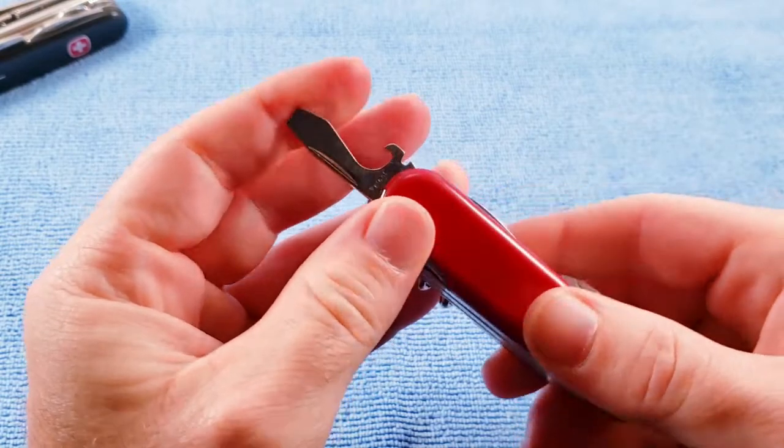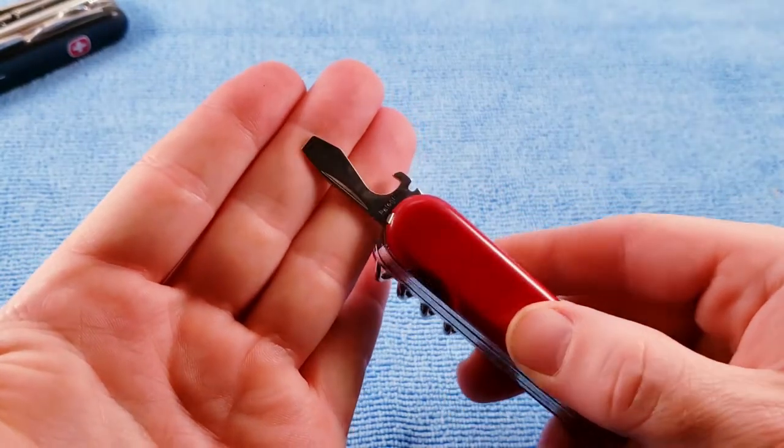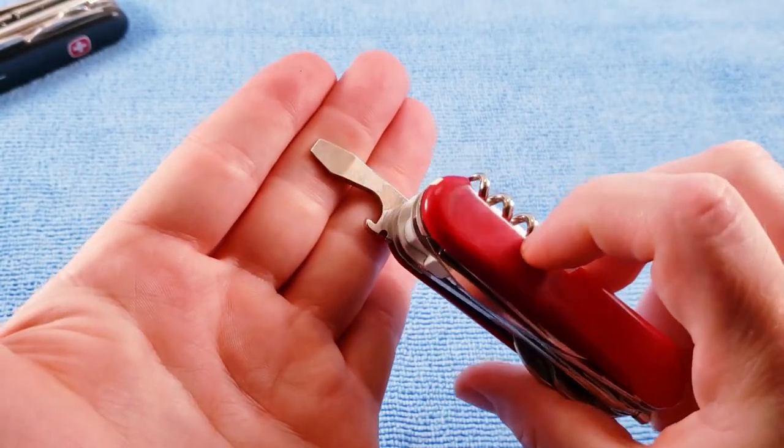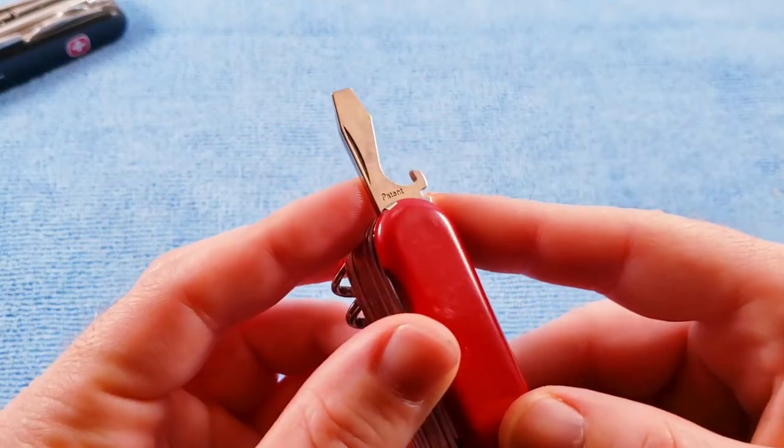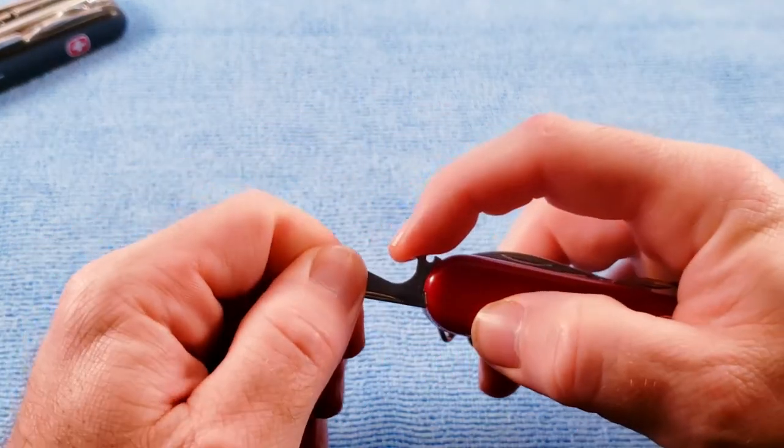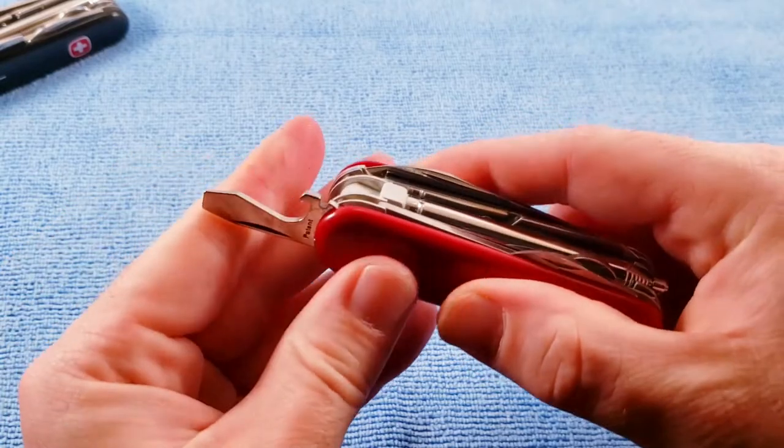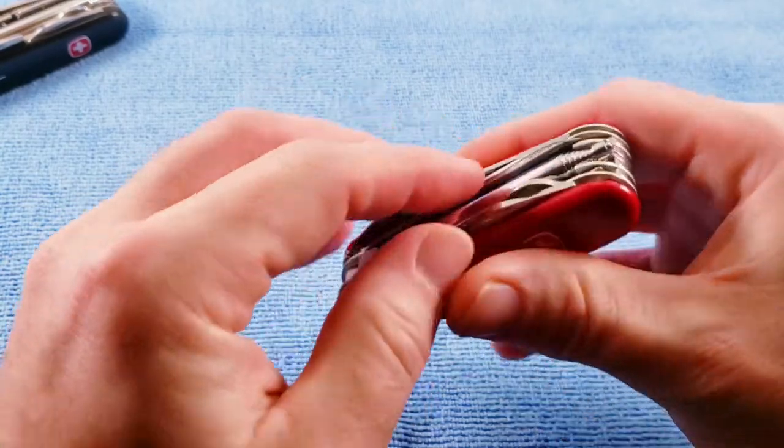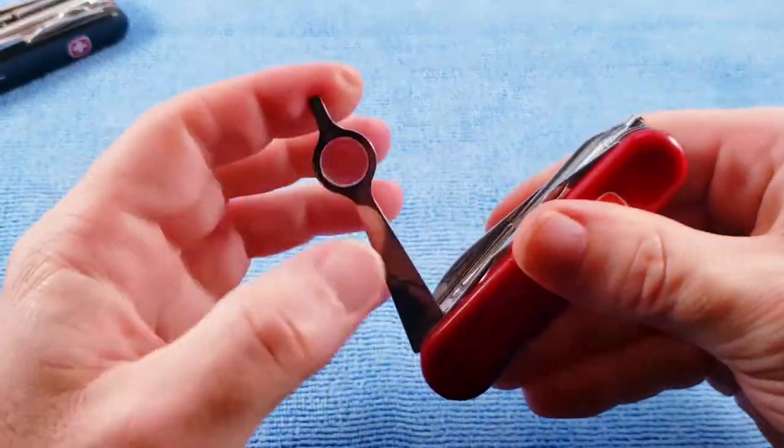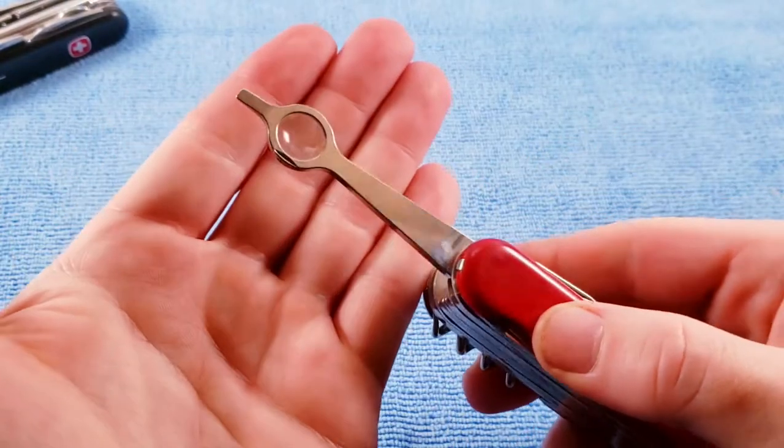Cap lifter, wire bender, and hollow ground screwdriver. As we see, we do have the patent stamp there indicating that we have the torque lock. We get the magnifying glass with the precision screwdriver.